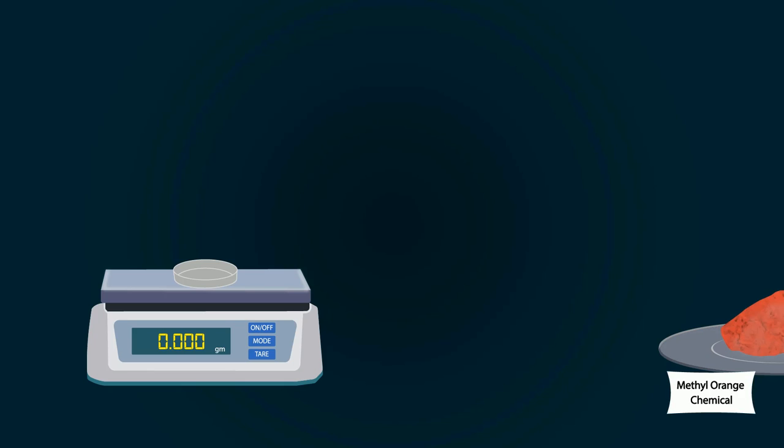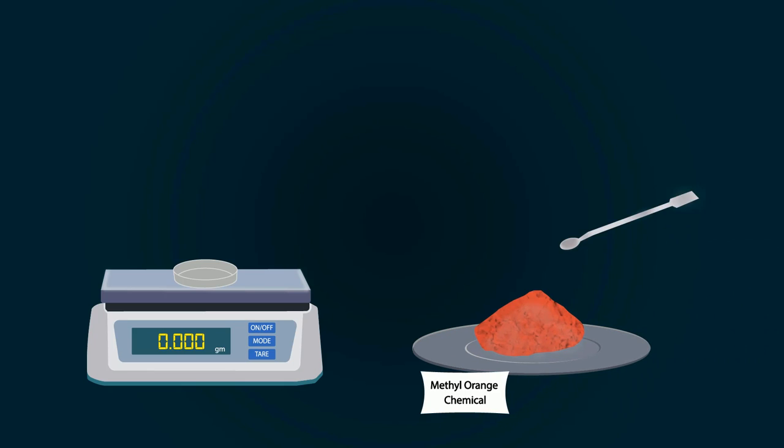Now take methyl orange chemical from the stock bottle. You can put methyl orange into the petri dish with the help of a spatula. Weigh precisely up to 1 gram.